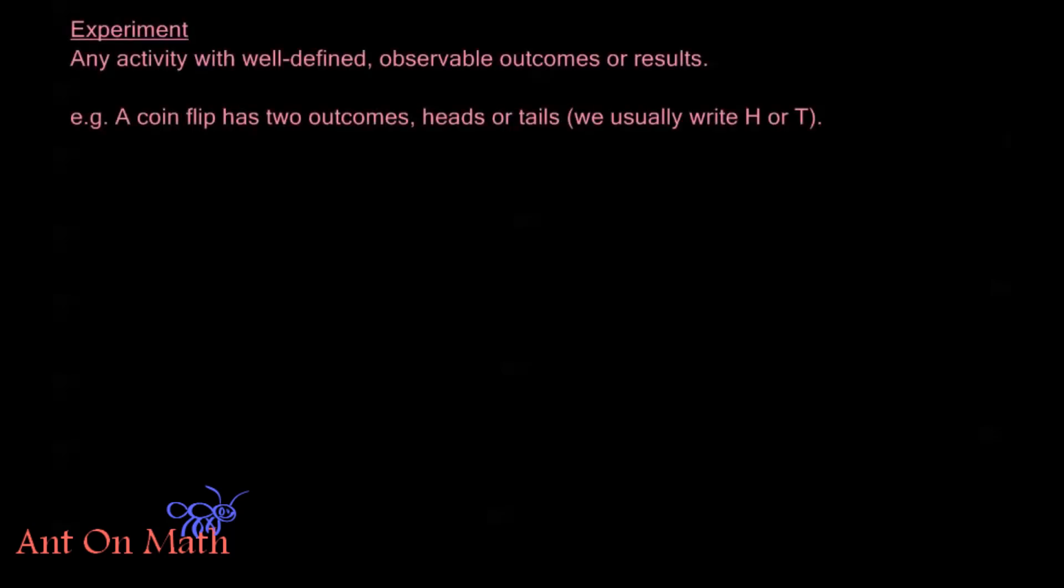So an experiment we define as any activity with a well-defined observable outcomes or results. Now remember when we say well-defined it means that we know exactly what those possible outcomes or results are and it's never going to be ambiguous. It's always going to be exactly one of the outcomes or results that we expect and it's always observable. So you can never have nothing happen unless nothing is one of the outcomes or results that we expect from the activity.